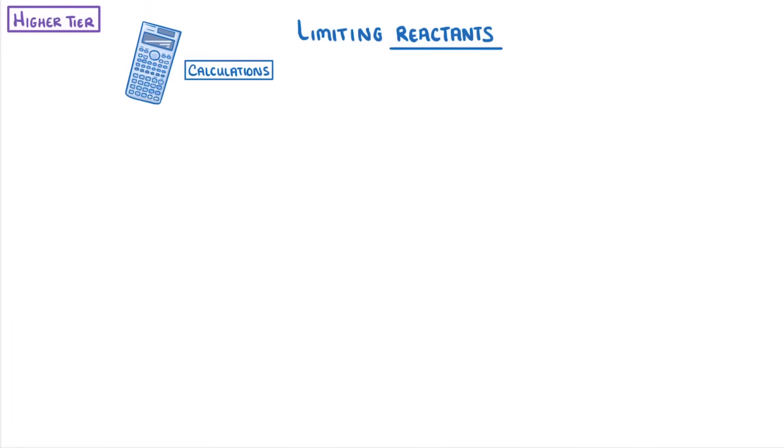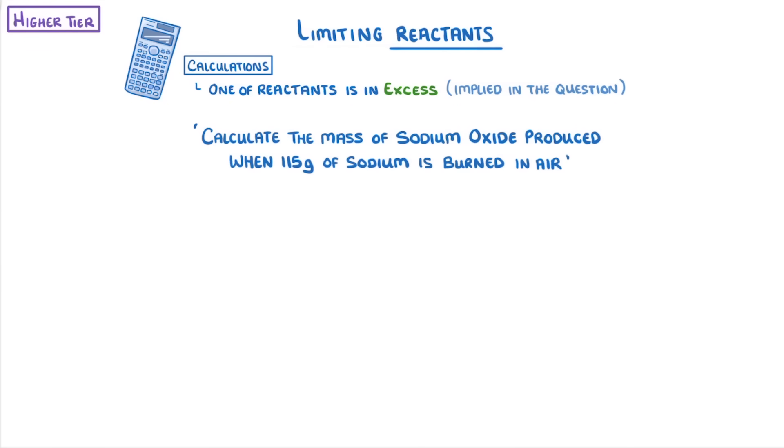Now, when it comes to calculations, you'll sometimes be told that one of the reactants is in excess. In other cases though, it might just be implied in the question. For example, calculate the mass of sodium oxide produced when 115 grams of sodium is burned in air.